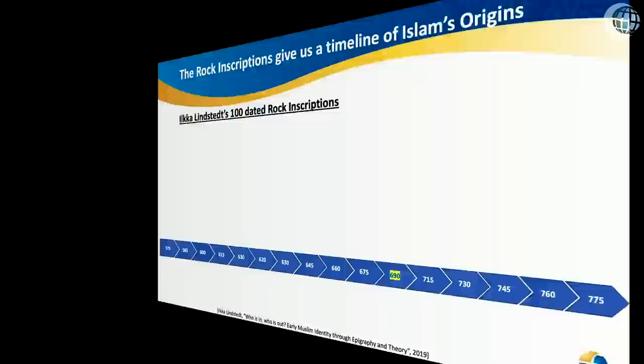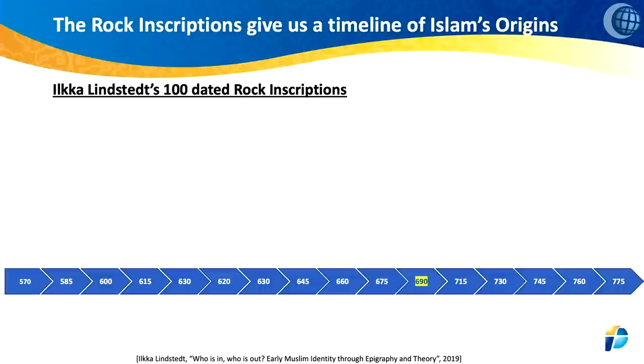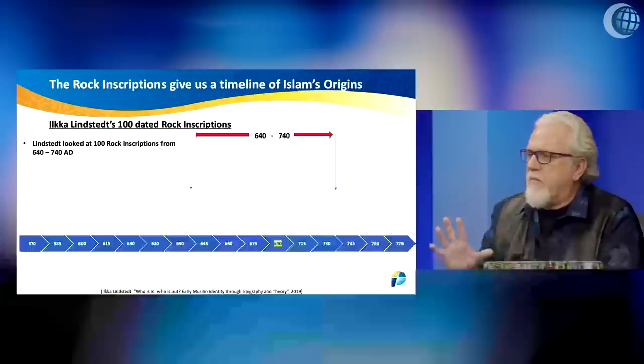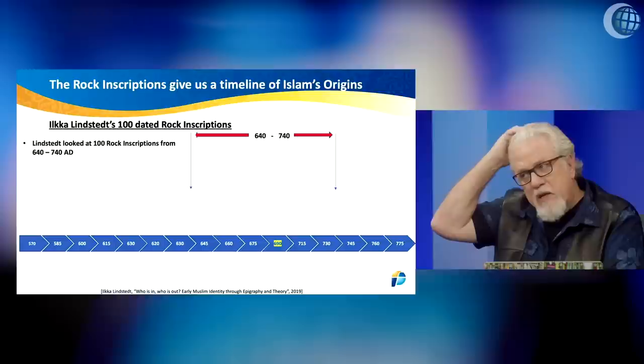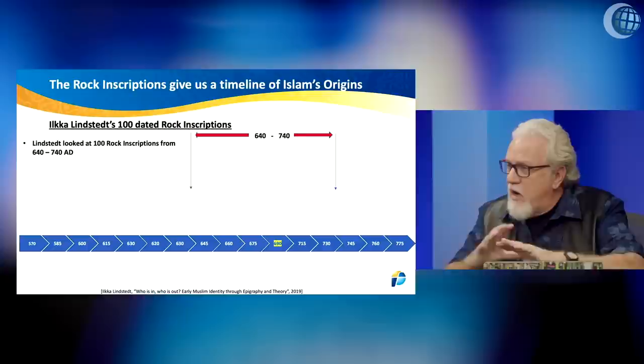It's these rock inscriptions that you have this man, Ilka Lindstad, who did his doctoral thesis on looking at a hundred years of rock inscriptions — primarily from 640 to 740, that hundred-year period. 640 is about the time when, if Muhammad had been living, it would have been about the time that he died, up until 740. That's about the time the Umayyads are declining and the Abbasids are about ready to take over. So we're talking mainly about the Umayyad period and the rightly guided caliphs — Umar, Uthman, and Ali — and then the Umayyad period starting with Mu'awiya. This is the early Islam, how Islam began, and the rock inscriptions he's looking at are right in that time period.